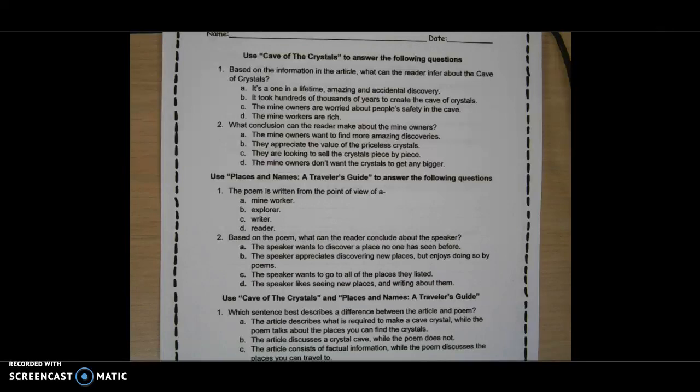2. Based on the poem, what can the reader conclude about the speaker? A. The speaker wants to discover a place no one has seen before. B. The speaker appreciates discovering new places but enjoys doing so by poems. C. The speaker wants to go to all the places they listed. Or D. The speaker likes seeing new places and writing about them.